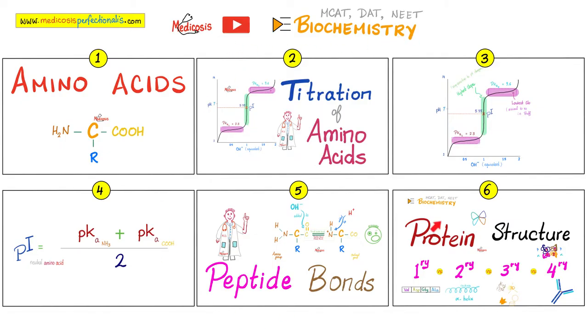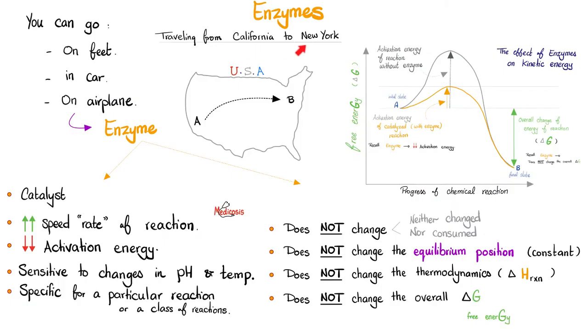Please watch the videos in my biochemistry playlist in order. Enzymes boost the speed of the reaction, and they lower the activation energy, making it easier for you to jump. But enzymes will not change, and they are not consumed by the reaction. They will not change the equilibrium position. They will not change the thermodynamics or the overall delta G.